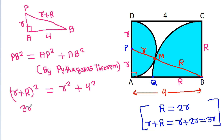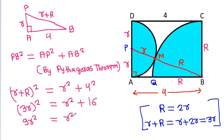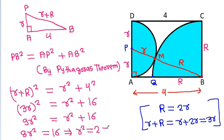So we have: (3r)² equals r² plus 16, which gives 9r² equals r² plus 16. Therefore 8r² equals 16, which means r² equals 2, and r equals the square root of 2.